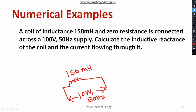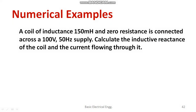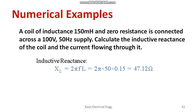Convert 150 milli-henry to henry: 150 × 10⁻³ H. Calculate the inductive reactance: XL = ω × L = 2πf × L = 2π × 50 × 0.15 = 47.12 Ω. Then current flowing through the circuit: I = V / XL.